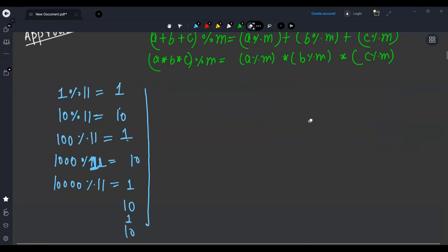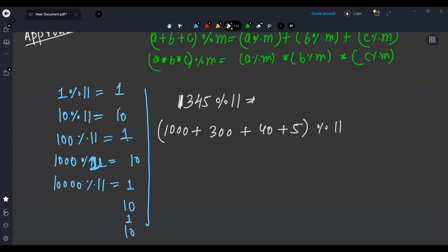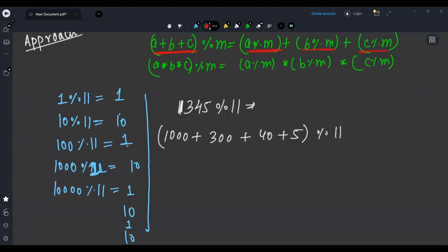Now come to the question. We have to find 1345 modulo 11. Can we express in extended form? I can write it as (1000 + 300 + 40 + 5) mod 11. Now as I said, (a + b + c) mod m can be written as (a mod m) + (b mod m) + (c mod m). So I will write it as (1000 mod 11) + (300 mod 11) + (40 mod 11) + (5 mod 11). Now I know that 1000 can be written as 1 × 1000 mod 11. This 300 can be written as 3 × 100 mod 11. This 40 can be written as 4 × 10 mod 11. And this 5 can be written as 5 × 1 mod 11.